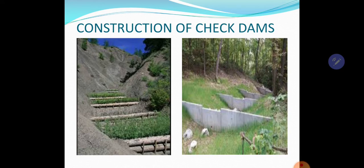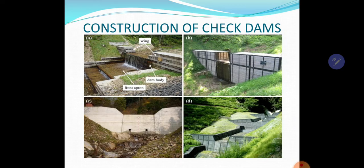Then construction of check dams — where there are streams you can see over here, cemented here and here with woods. Sometimes in Gujarat they say 'borivand' — they put sacks of cement or sand to stop or slow down the flow of water. That is called a check dam. You can see four examples of check dams here, and it avoids the erosion of the soil.